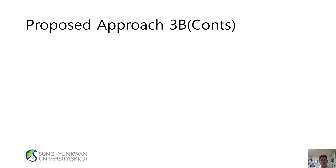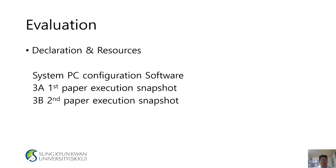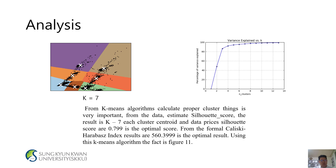Profile of Project 3B — Reducing the Dataset. Evaluation and Resources: CSNPC configuration software. 3A: first paper execution snapshot. 3B: second paper execution snapshot. Energy with k equals 7. Profile of Project 3C is very important. From the data estimate, 3A's result is k equals 7. Each cluster center with data prices: the silhouette score is 0.799 as the optimal score. The Calinski-Harabasz index result is 560.3999 as the optimal result.